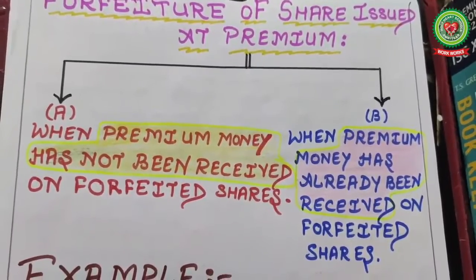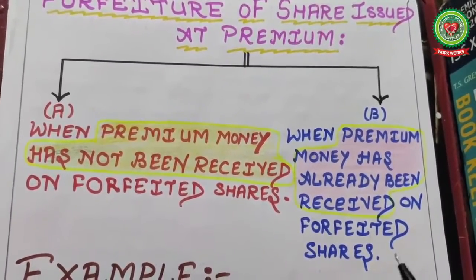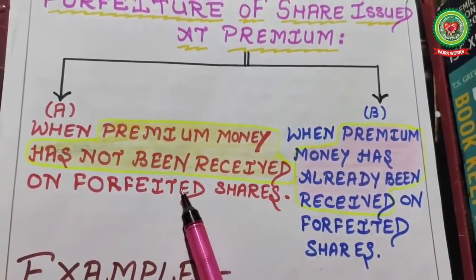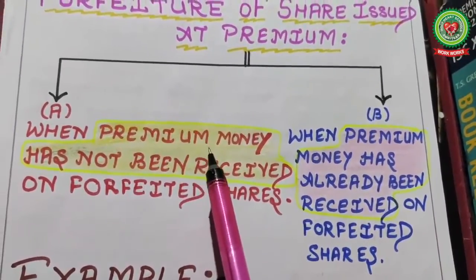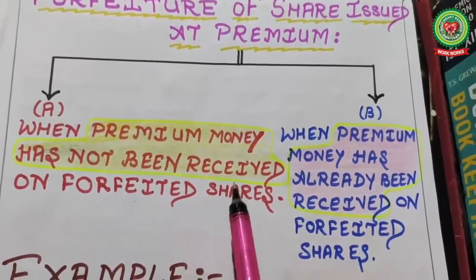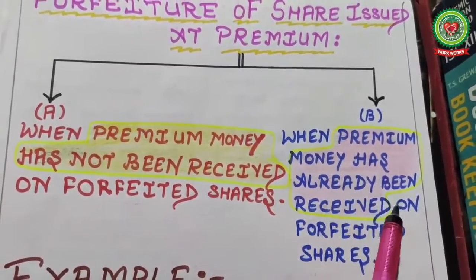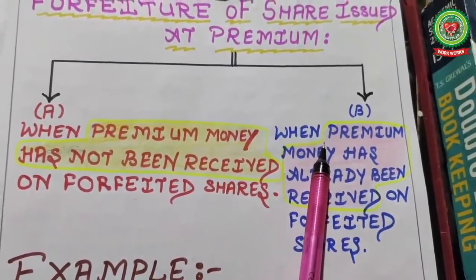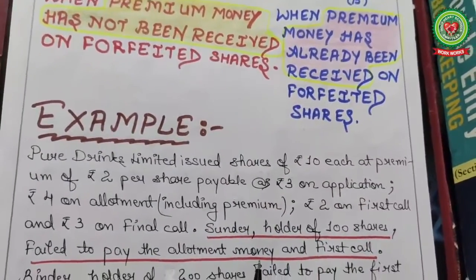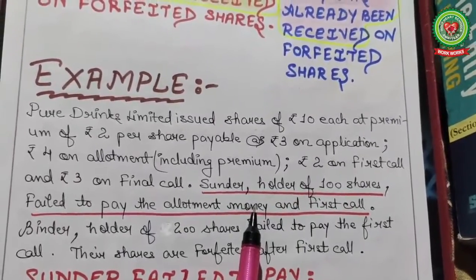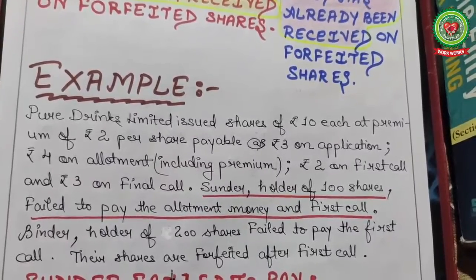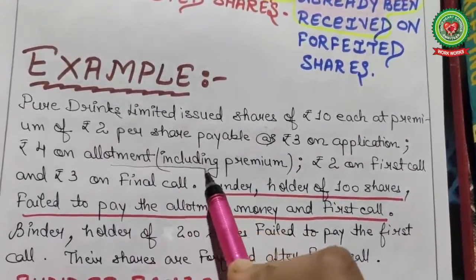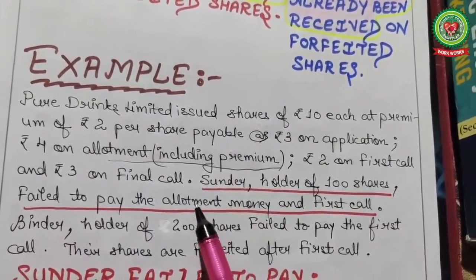For forfeiture of shares issued at premium, there are two cases. Case one: when premium money has not been received on forfeited shares. Case two: when premium money has already been received on forfeited shares. For example, Pure Drinks Limited issued shares of rupees 10 at a premium of rupees 2 per share, payable as rupees 3 on application, rupees 4 on allotment including premium, rupees 2 on first call, and rupees 3 on final call.